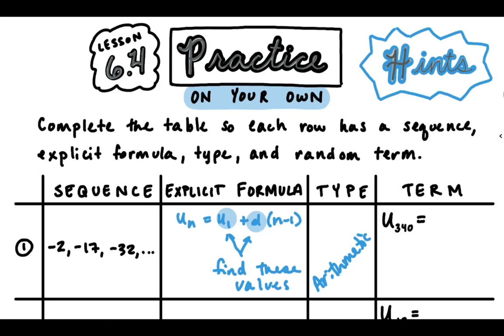And then you're just going to plug them into the formula. For finding the random term, remember that that subscript is the term number which is n in our formula. So you're going to plug in n equals 340. And that's how you will find the term. So that's it for the first one.